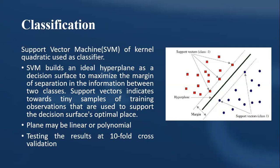Classification: For classification, support vector machines of different kernel types were used as classifiers. SVM builds an ideal hyperplane as a decision surface to maximize the margin of separation between two classes. Support vectors are training samples that are used to determine the decision surface optimal placement.